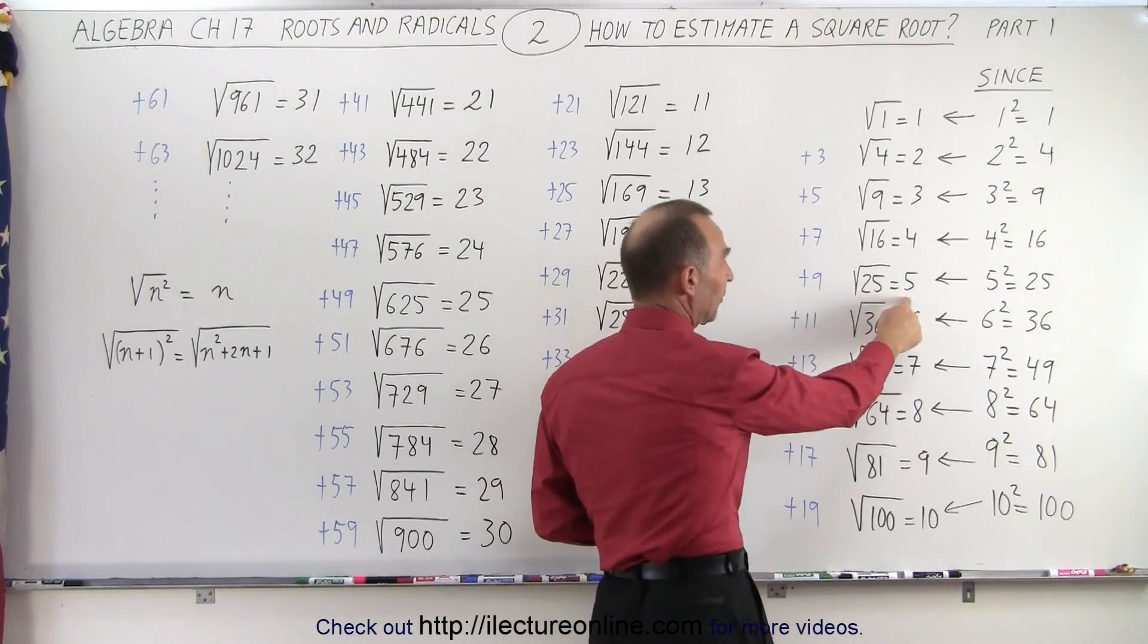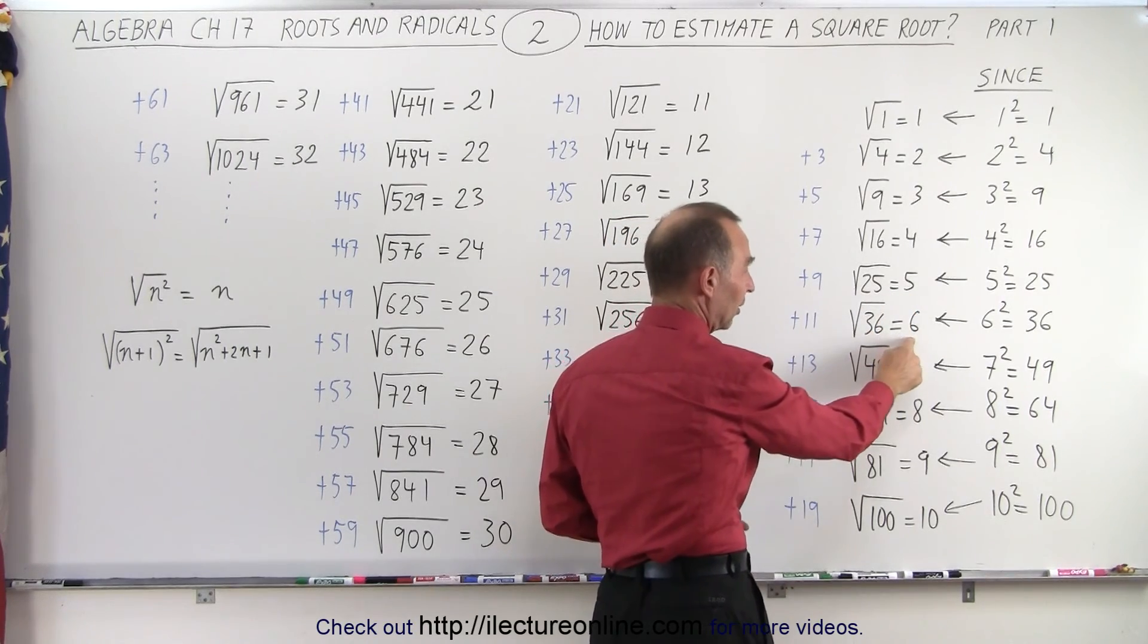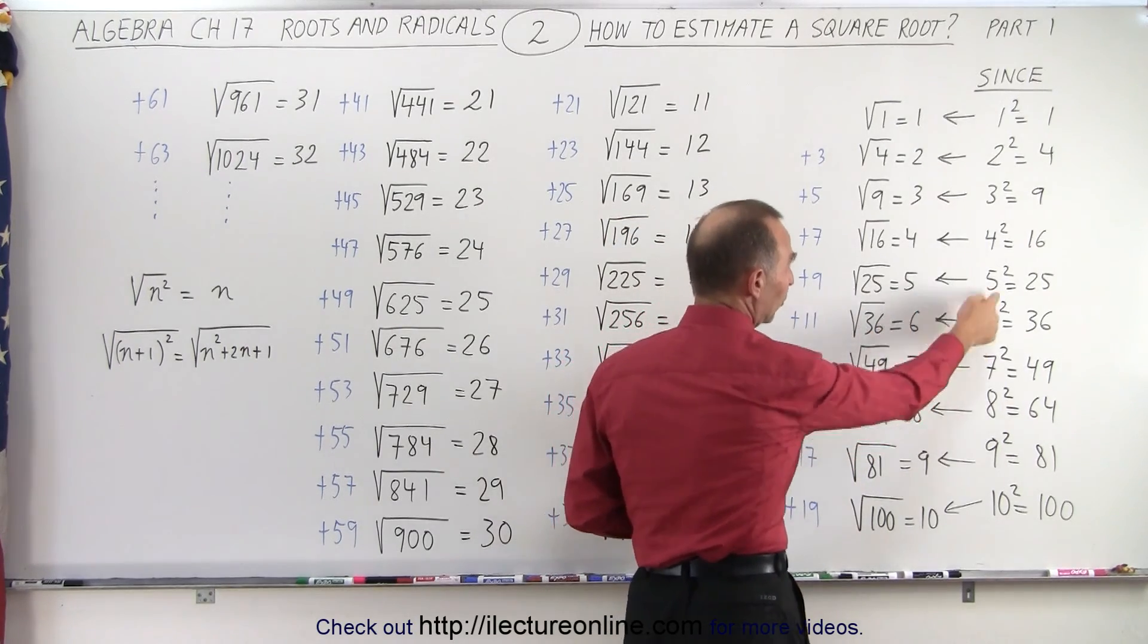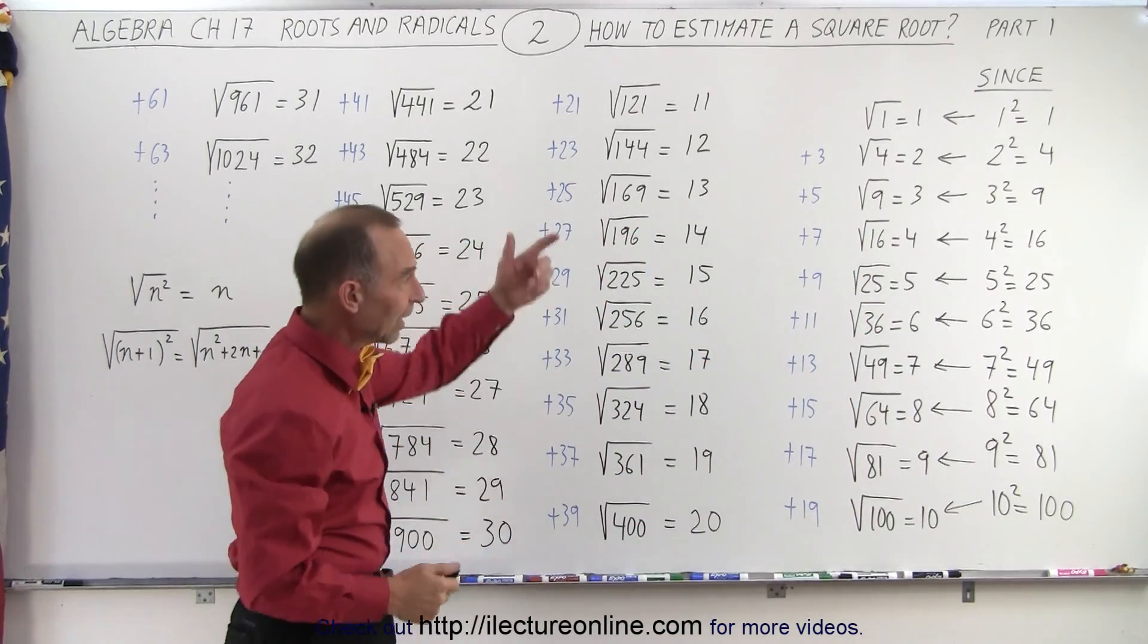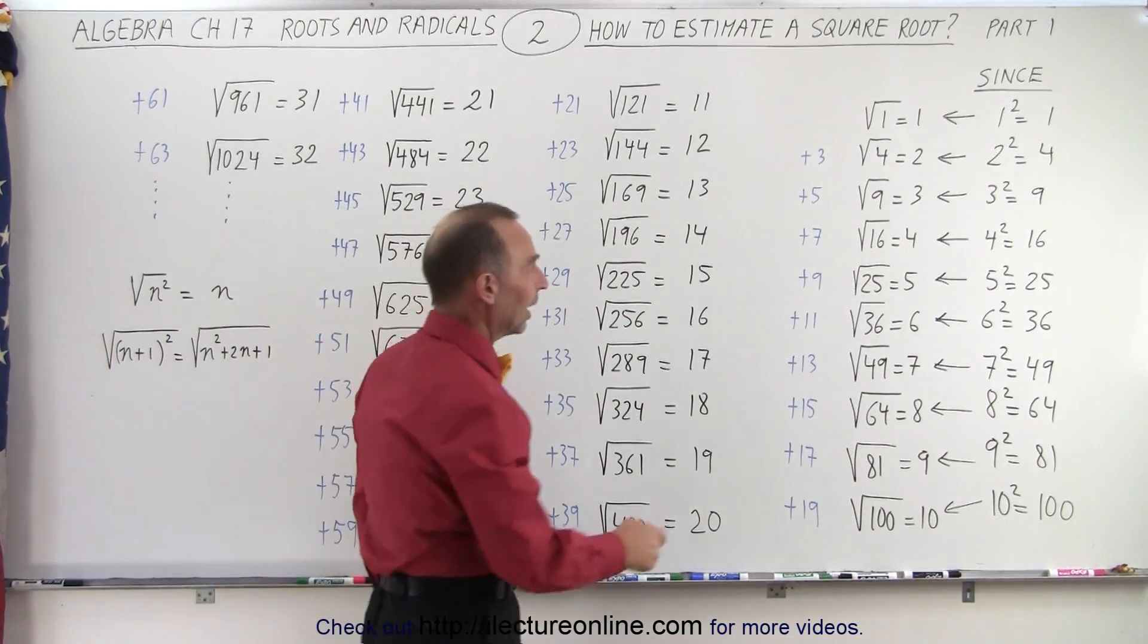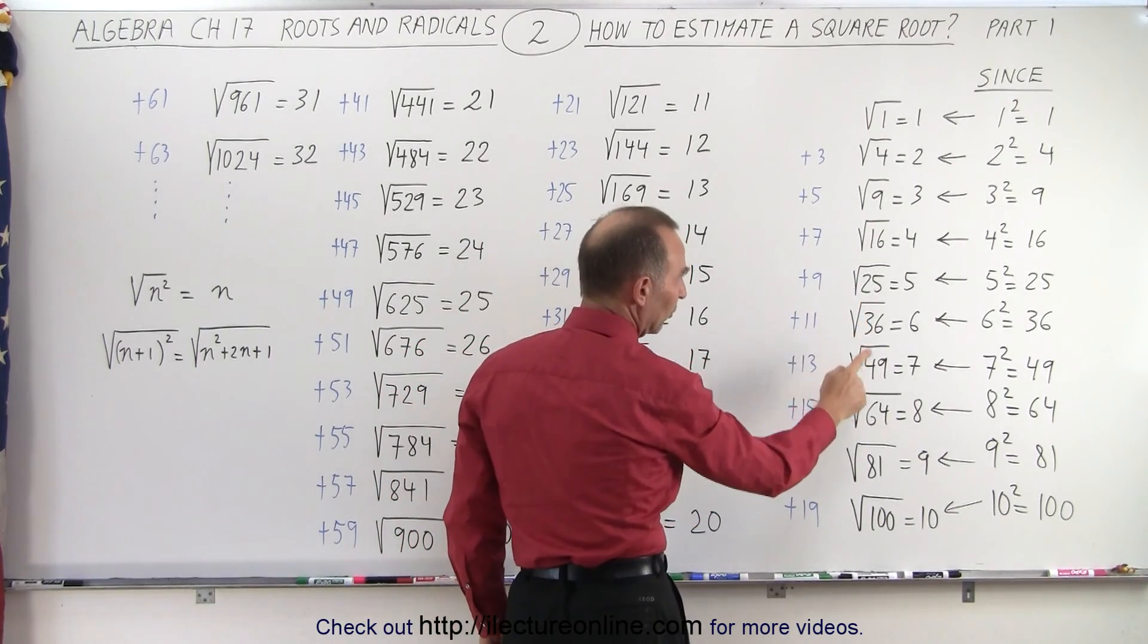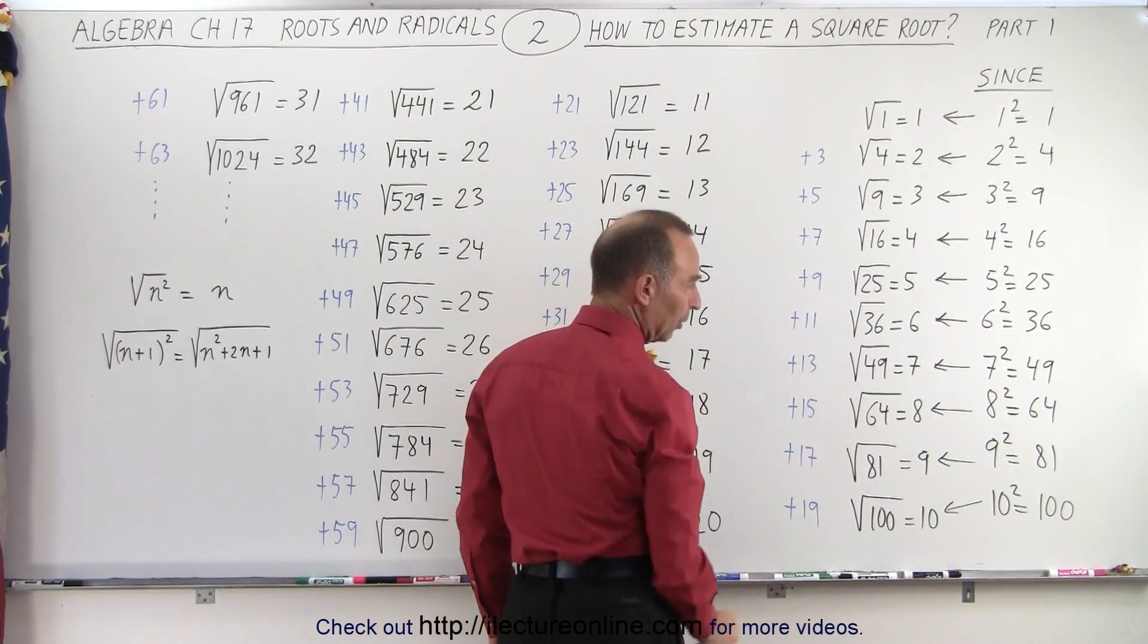So you can see that the square root of 25 is 5, the square root of 36 is 6, and so forth, because 6 squared gives us back the original number, 36. And if you take a look at the numbers, notice that we have the square root of 25, the square root of 36, the square root of 49, and so forth.